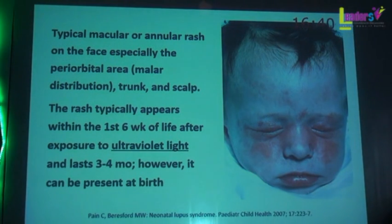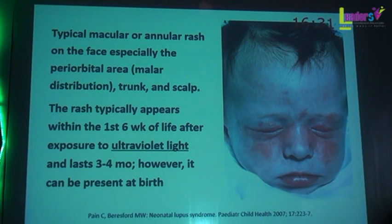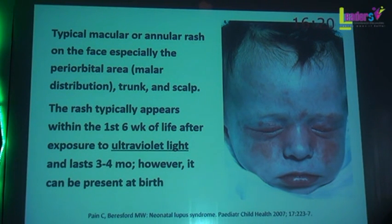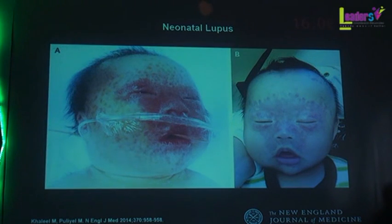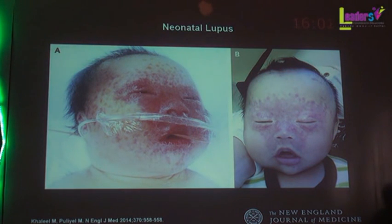Usually the rash is in the malar area — this is a newly born — it can take the most common distribution in the face but can be found anywhere. It increases with ultraviolet exposure, so when the infant is exposed to sunlight the rash increases in intensity and disseminates. Some investigators say it also increases with phototherapy given for neonatal jaundice. This neonate case was published in the New England Journal of Medicine.